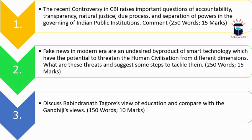The second question is: 'Fake news in the modern era is an undesired by-product of smart technology, which has the potential to threaten human civilization from different dimensions. What are these threats? Suggest some steps to tackle them.' Fake news has become quite popular and is shared via electronic media without any check — people believe it to be real without considering how it could harm the social fabric of society. You have to write this in 250 words, and the marks allotted are 15.